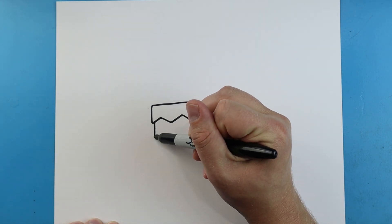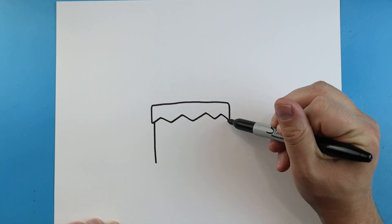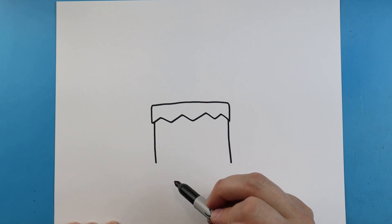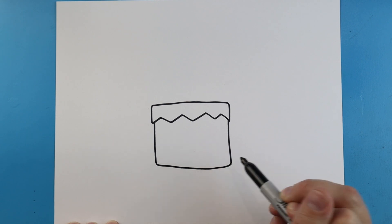Next we'll start here and we will make a line that comes down. We will also do the same thing over here, two lines that come down. Next I'm going to connect these lines with a line that comes across.